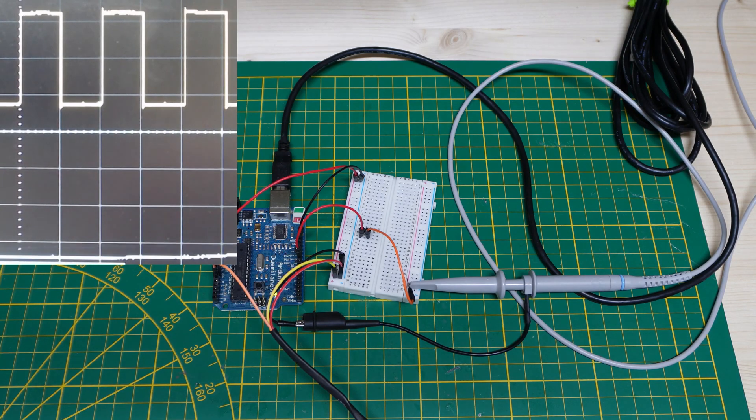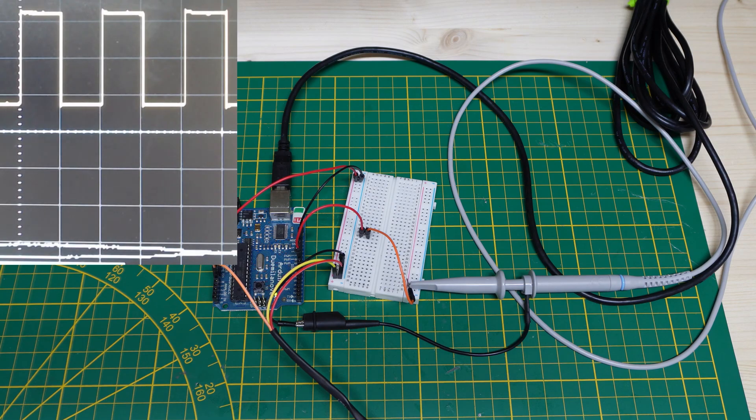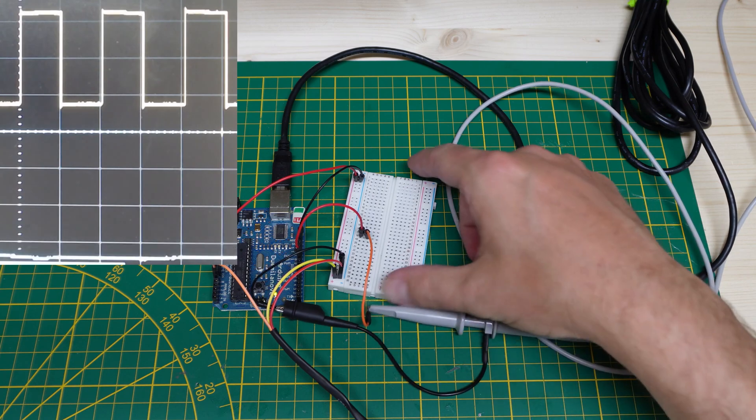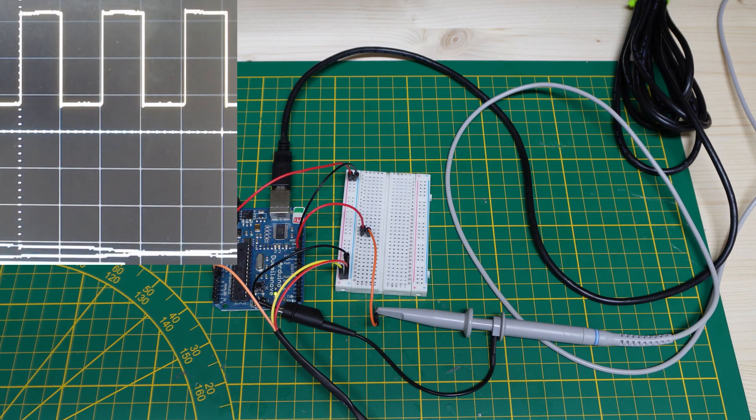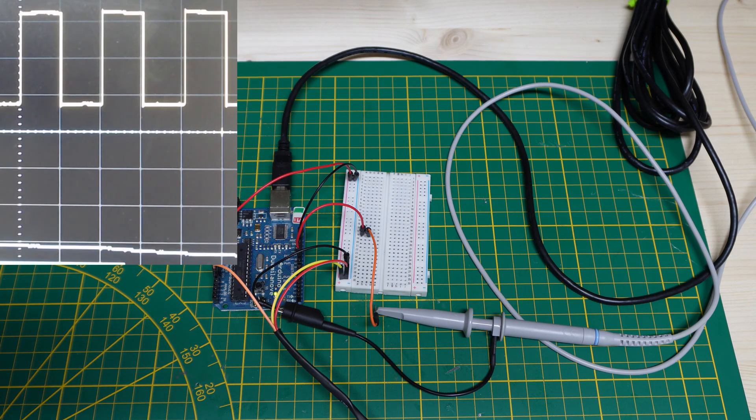So we have this PWM signal and now we want to look at its average value. We will do that by having this signal charge and discharge a capacitor, which takes time, and that signal will have to go through a resistor, so it will take even more time.